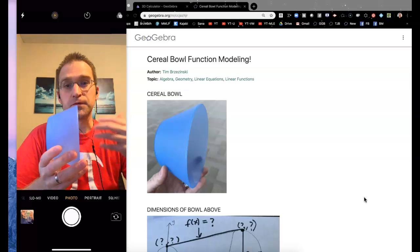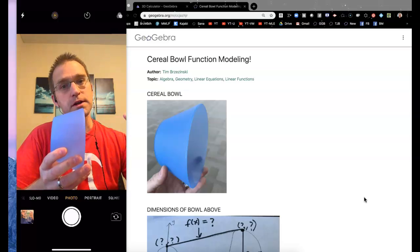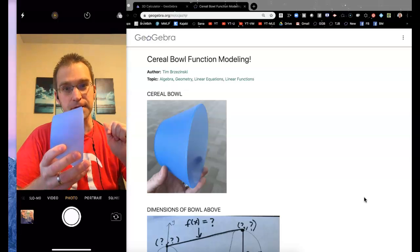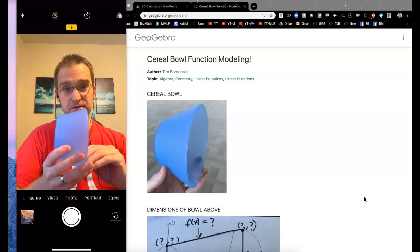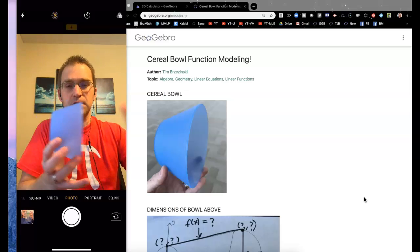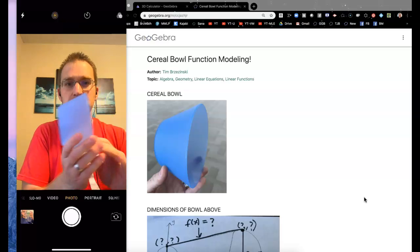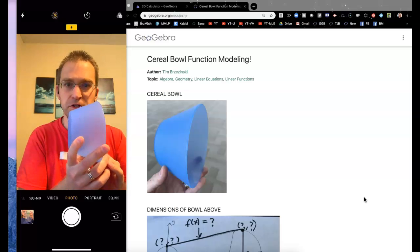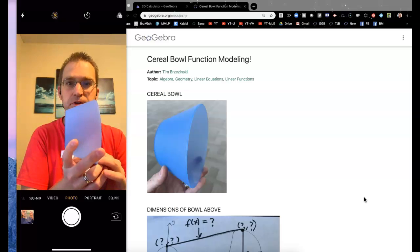This is an activity through which we can engage Algebra 1 and Geometry students with modeling, even Calculus students, when they have to find the volume of a solid of revolution. This is something that we can use in several curricula here. I'm going to show you how to build it quickly in GeoGebra 3D calculator.